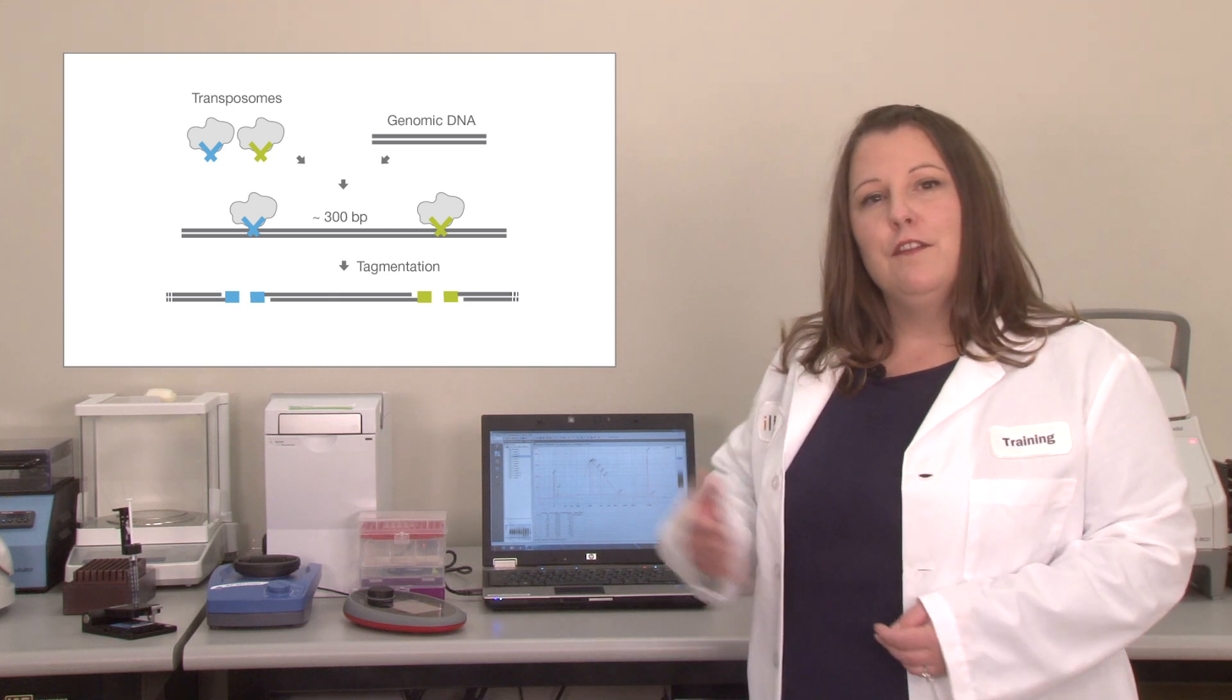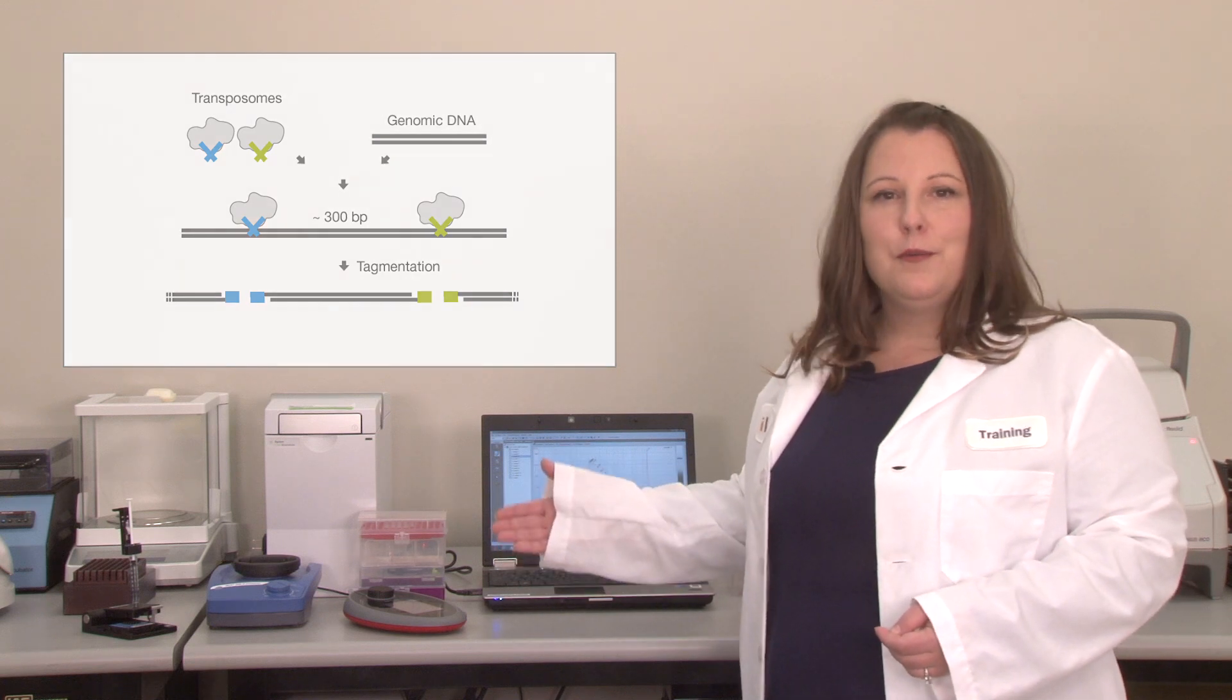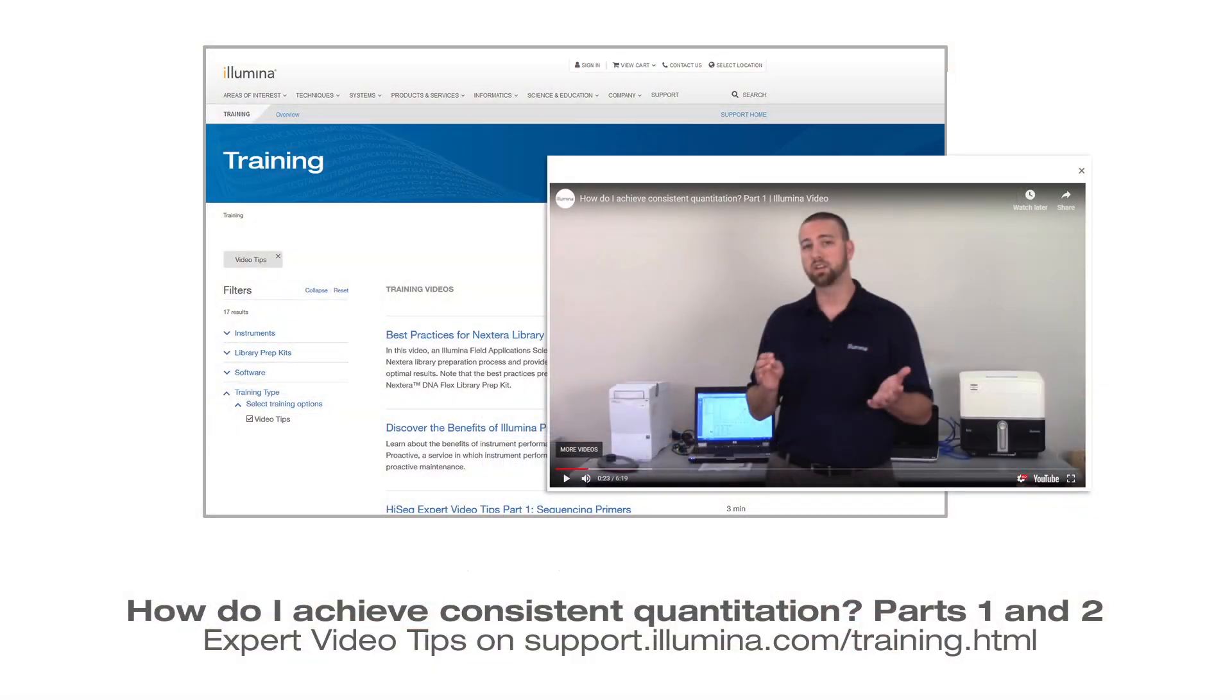Illumina recommends using a fluorometric method like Qubit or PicoGreen for quantification while avoiding use of UV absorbance methods. See the video series titled How Do I Achieve Consistent Quantitation.